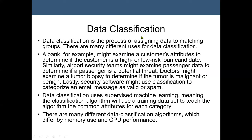Data classification is another type of machine learning and data mining algorithm. It is a two-step process: first, we need a training set to build a model; then after building the model, we need a test set to test the model. A training set is a dataset with a class label or target variable, and the test set is used to measure the accuracy of the model.